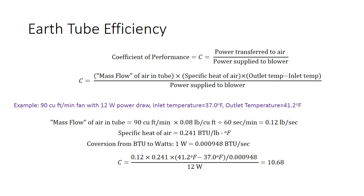Some notes on the efficiency of these earth tubes. This is an equation, not super complicated even though it looks like it. A typical measure of efficiency of any heating or cooling system is called the coefficient of performance. Essentially that's the power transferred to the air via heating or cooling divided by the power supplied to the blower.